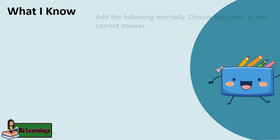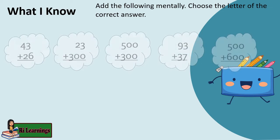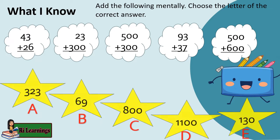What I Know. Add the following mentally. Choose the letter of the correct answer. The problems are: 43 plus 26; 23 plus 300; 500 plus 300; 93 plus 37; 500 plus 600.